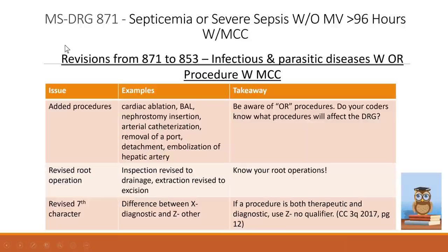When DRG 871 was revised to 853, the majority of changes were due to added procedures that the coder had missed. Examples of missed procedures include cardiac ablation, bronchoscopy, BAL, nephrostomy insertion, and removal of a port. When these procedure codes were added, the DRG changed to 853. The takeaway: make sure coders are aware of what constitutes an OR procedure and ensure those procedures are coded. They may seem insignificant, but sometimes they change the DRG to 853.